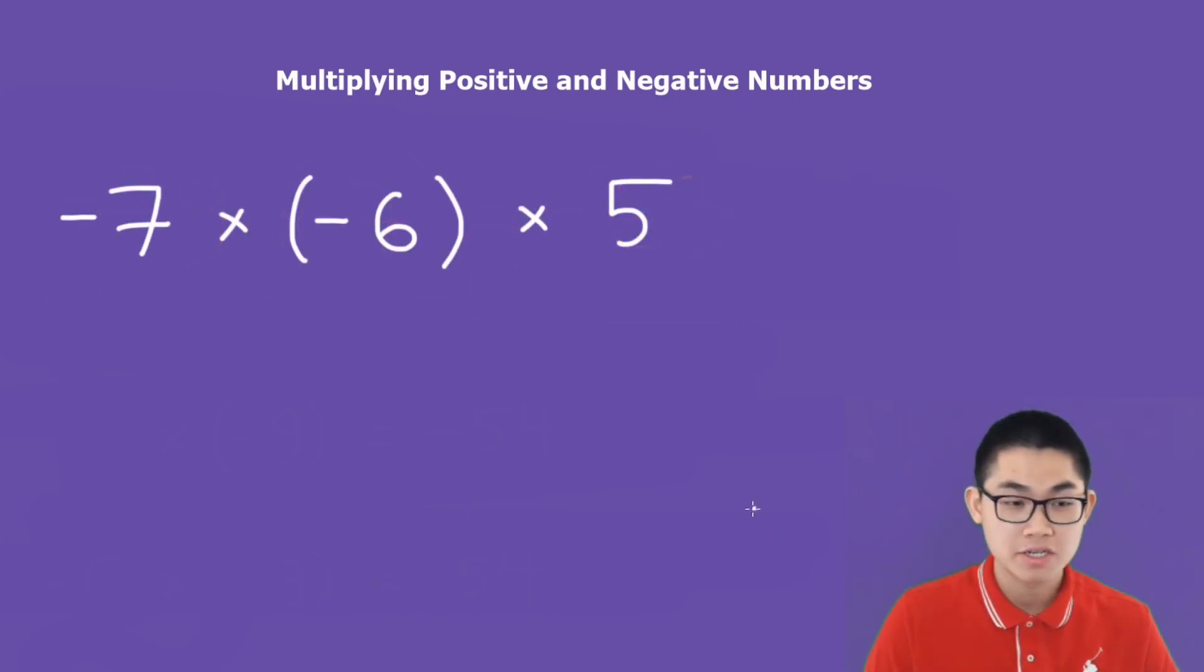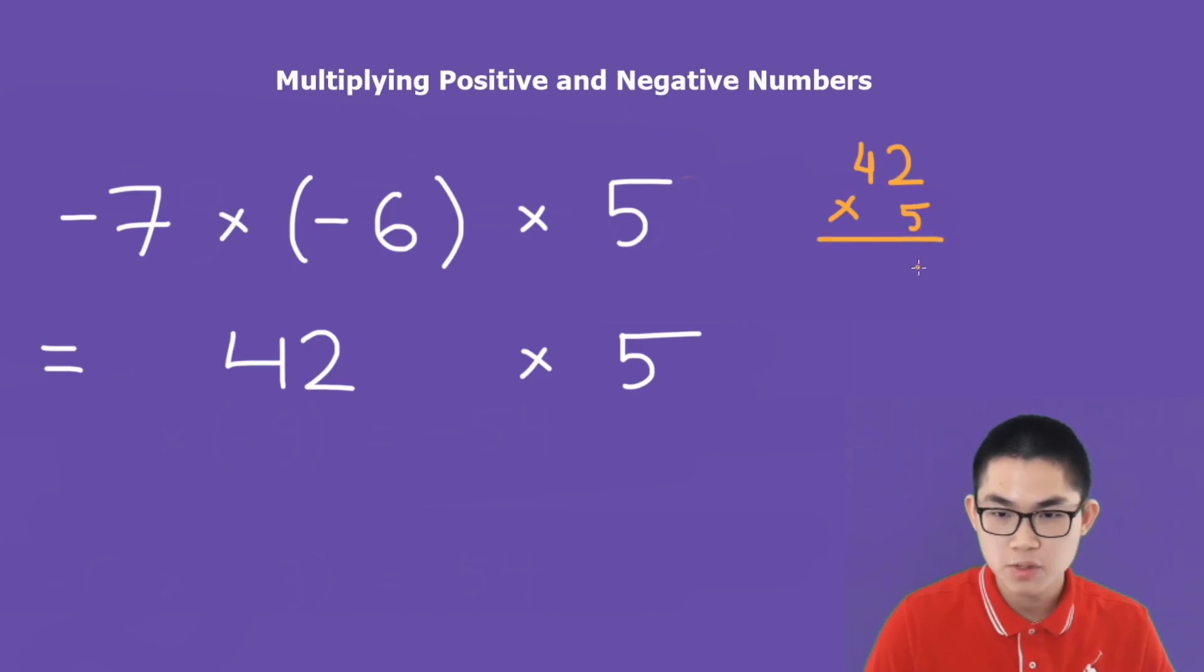Let's try something harder. We have negative 7 times negative 6 times 5. So negative 7 times negative 6 will give you positive 42. And what is 42 times 5? 42 times 5. So 5 times 2 is 10. 4 times 5 is 20. Add 1. That gives you 21. So the answer will be 210.